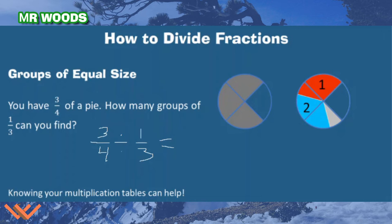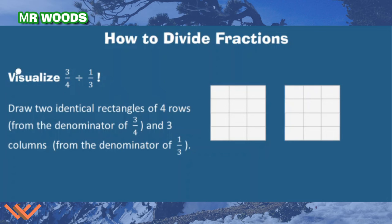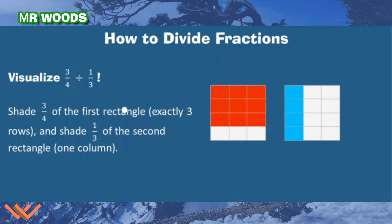Let's take a look at another way to visualize this. So we're going to visualize 3 fourths divided by 1 third. Start by creating 2 identical rectangles of 4 rows. So I have 1, 2, 3, 4 rows. That's from the denominator of 3 fourths. And 3 columns from the denominator of 1/3. So there's 1, 2, 3 columns there.